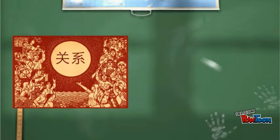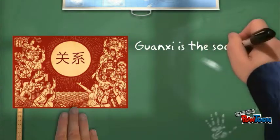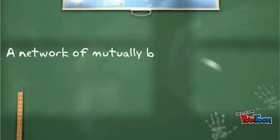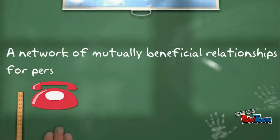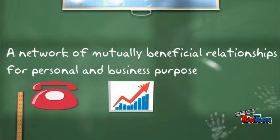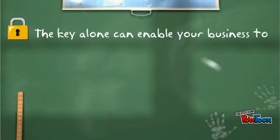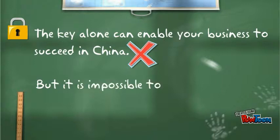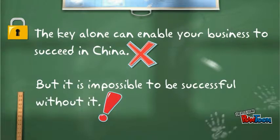So, what does 关系 mean? 关系 is a social relationship or connection between people. It is a network of mutually beneficial relationships for personal and business purposes. It is not the key alone that can enable your business to succeed in China, but it is impossible to be successful without it.